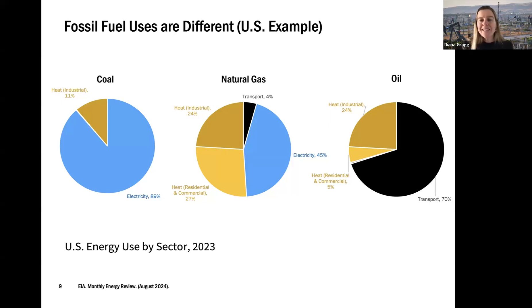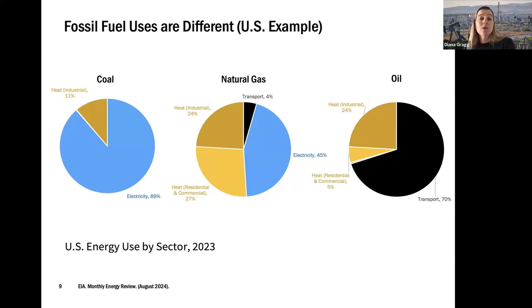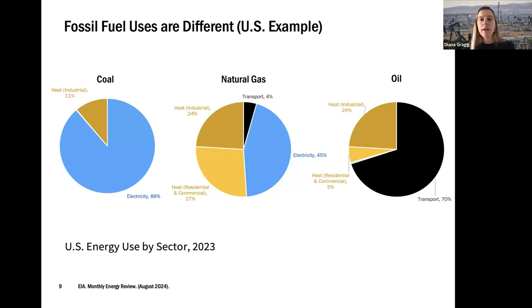Natural gas is our most diverse fuel. It's used for heat in industry, in residential and commercial buildings for water heating, cooking, and space heating, in our electricity system, and in a small portion for transportation — mostly to transport the natural gas itself. It's a very diverse fuel used across many different sectors for different human needs.